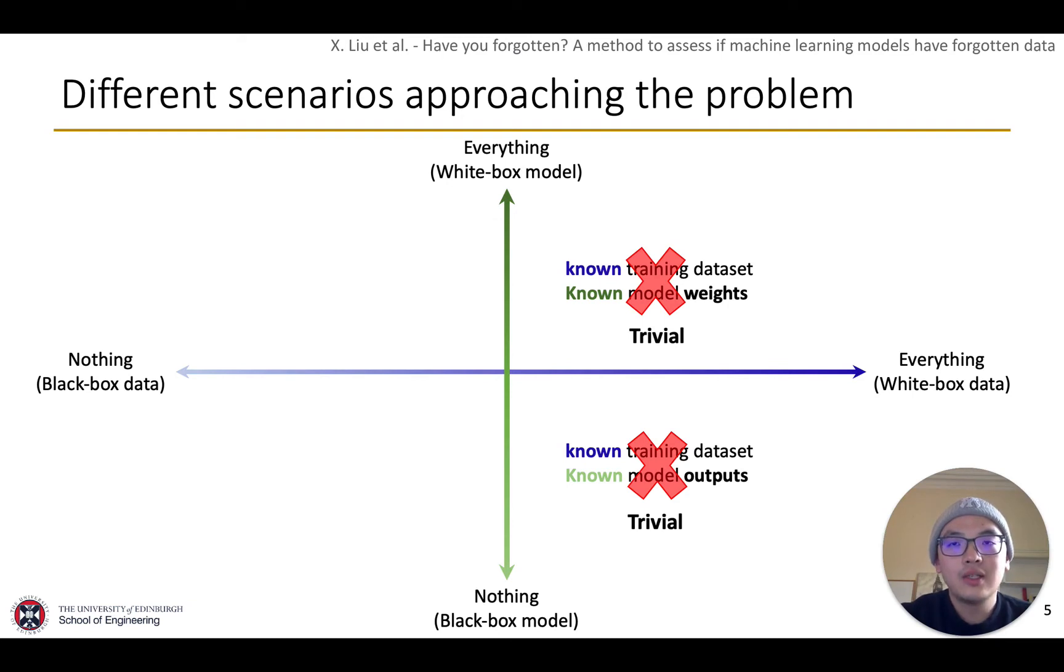When training dataset is unknown, and everything of the model is known, reverse engineering could be used to recover the training data. And it's not practical, as deep models usually serve as API and only the outputs are given.